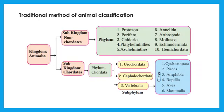Let us learn about the classification in more detail. Non-chordates are divided into ten phyla. Protozoa, Porifera, Coelenterata or Cnidaria, Platyhelminthus, Aschelminthus, Annelida, Arthropoda, Mollusca, Echinodermata and Hemichordata.